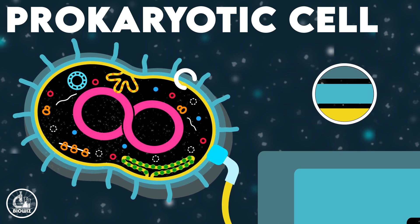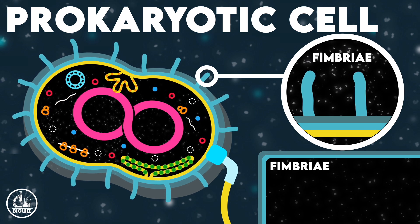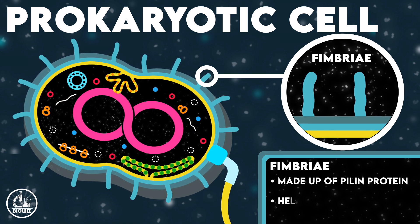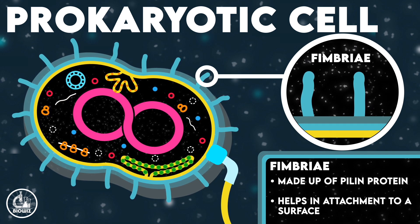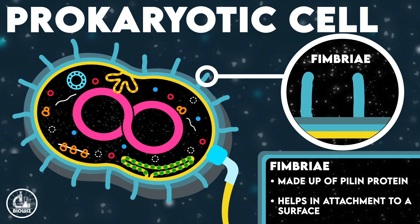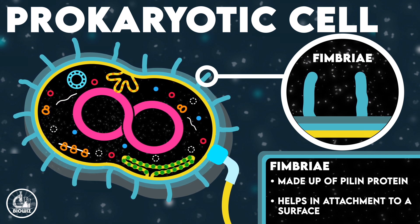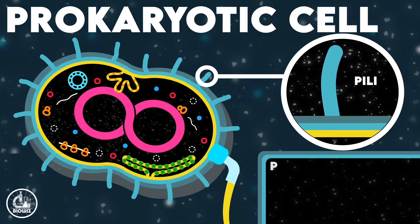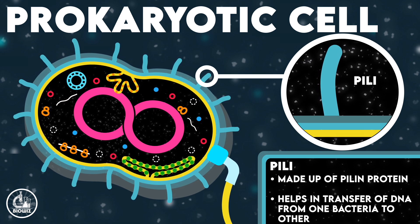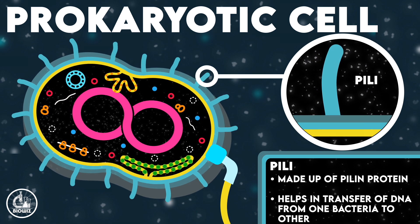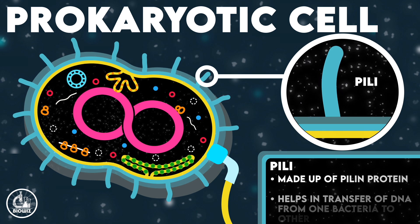The projections that arise outside the cell include pili, fimbriae, and flagella. The fimbriae are small bristle-like structures that arise from the cell. These structures are small in size but more in number, and fimbriae help the cell to attach to a surface. Pili, on the other hand, are relatively longer structures but fewer in number. Pili help in the transfer of DNA from one bacterium to another by a process called conjugation.